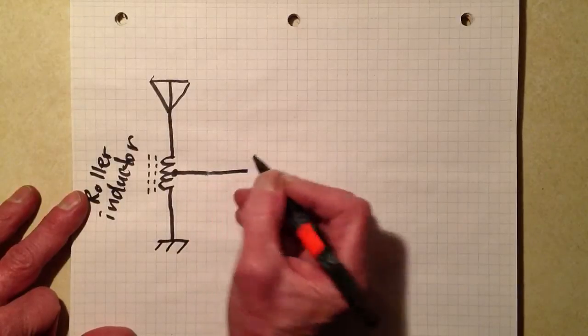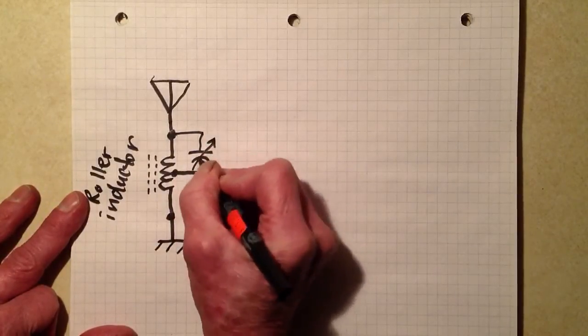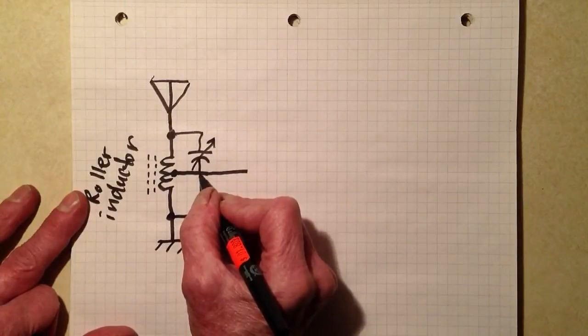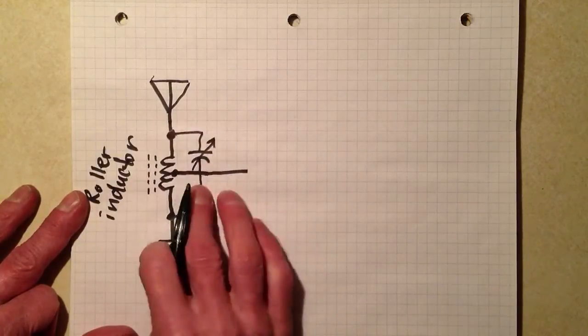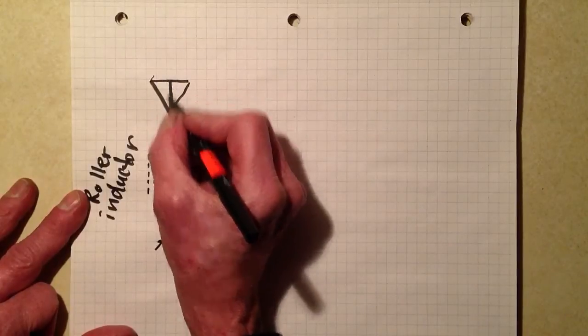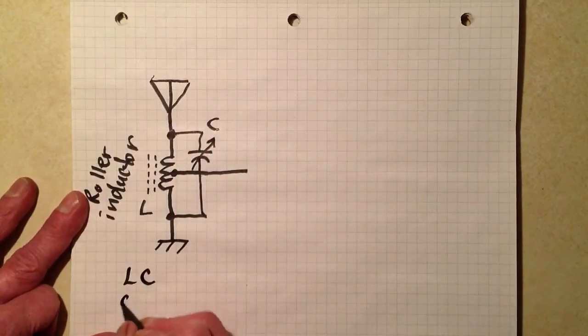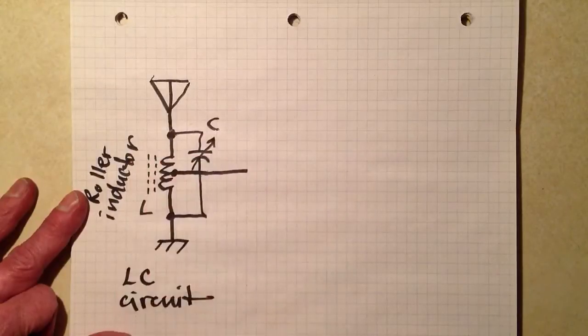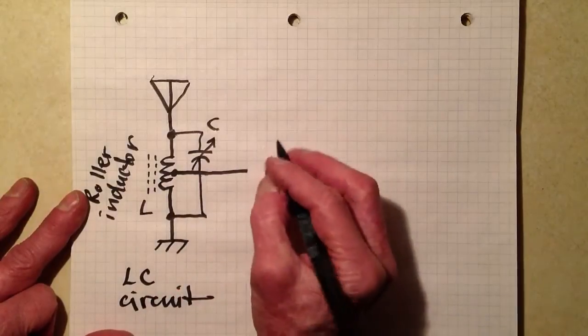Alright, so this whole business, you have a variable capacitor across that coil. Now remember, when lines cross in a schematic diagram, it does not indicate a connection between those wires unless you see a heavy black dot there. So these two crossing lines do not indicate connected wires. Okay, so what happens is the signal in the antenna resonates in this LC-tuned circuit. And that LC circuit should be tuned to resonate at the frequency of the station that you want to bring in.